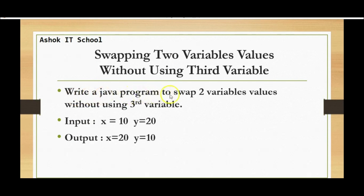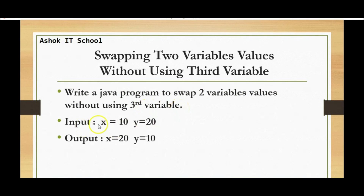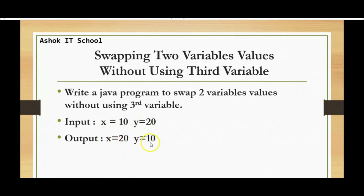Write a Java program to swap two variables' values without using a third variable. The input is x equal to 10 and y equal to 20. After swapping, x should hold 20 and y should hold 10. That is our expected output.